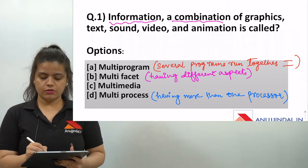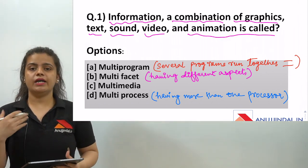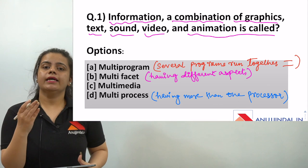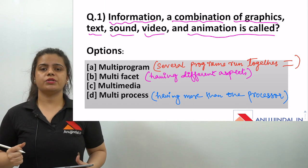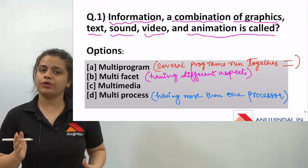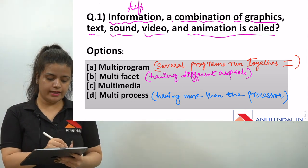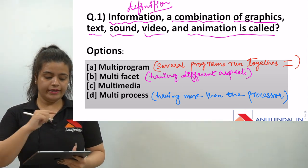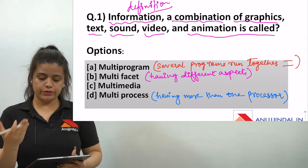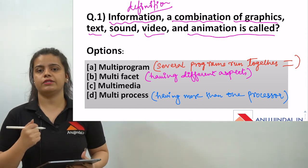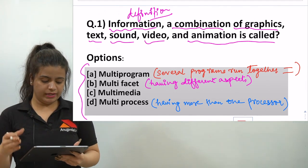The first question is: information — a combination of graphics, text, sound, video, and animation is called what? In UGC MTA NET computers, you mostly get definitions and abbreviations. The options given here are: multi-program, multi-facet, multimedia, and multi-processes.